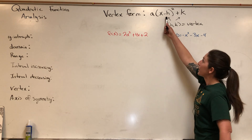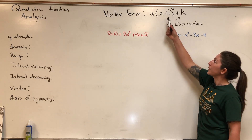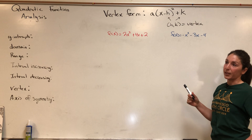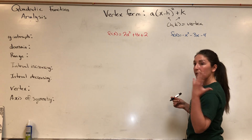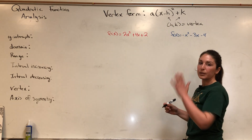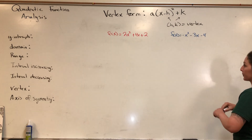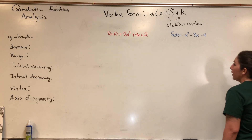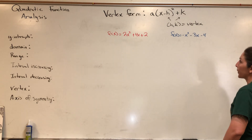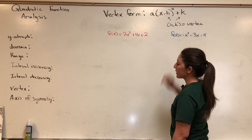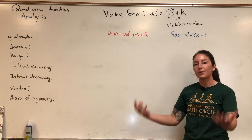Notice there's a minus h in vertex form, so for h you take the opposite of what you see, and for k you take the same sign. The value h controls the horizontal shift and k controls the vertical shift. To get from standard form to vertex form, we use completing the square — the same technique we learned with circles.